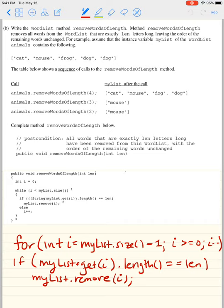Leaving the order of remaining words unchanged. For example, assume that the instance variable myList of the world is cat, mouse, frog, dog, dog. If it says four then it's going to leave anything that's not four. If it says three then it gets rid of him, him and him.